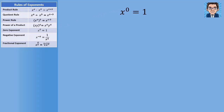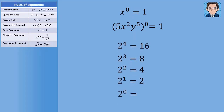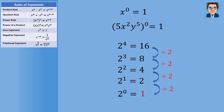The next rule tells us that anything to the zero power is one. So even something complicated raised to the zero power still gives one. Rather than just memorizing it, let's see why it makes sense. Looking at powers of two: going up, we multiply by two; going down, we divide by two. So going from two to the first down to two to the zero, we divide by two and get one. That's a demonstration of why something to the zero power must equal one.